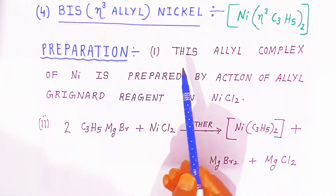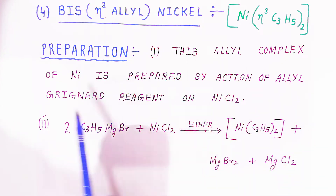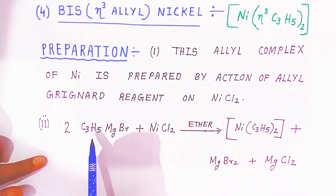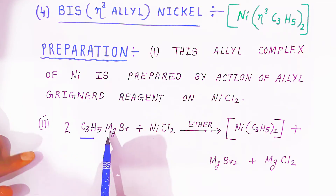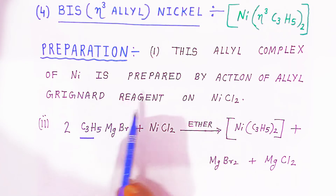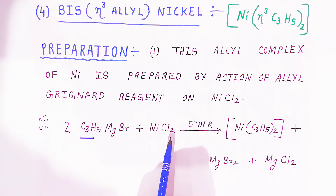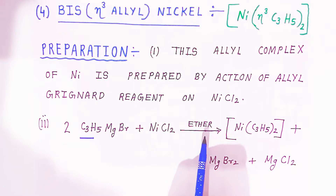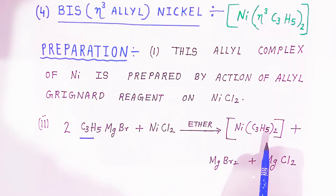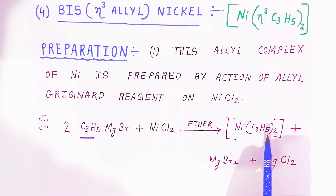The first preparation: this allyl complex of nickel is prepared by the action of allyl Grignard reagent. We take allyl magnesium bromide (allyl Grignard reagent). Two molecules of allyl Grignard reagent react with nickel chloride in the presence of ether, giving the base allyl nickel complex.